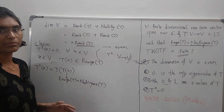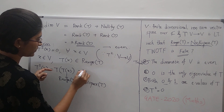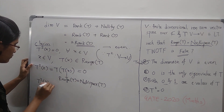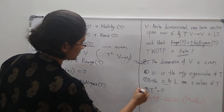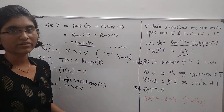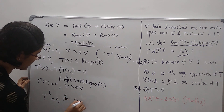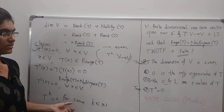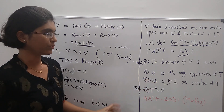But we know that range of T equals null space of T. So T of x belongs to null space of T. The null space of T means that when you apply T on that vector, you get 0. So when you apply T on T of x, we get 0. Hence T squared of x equals 0, and since x was arbitrary, T squared of x equals 0 for all x in V. So T squared equals 0 is satisfied — this option is true. T squared equal to 0 means T is a nilpotent operator, and 0 is the only eigenvalue for a nilpotent operator. Hence option B is also true.